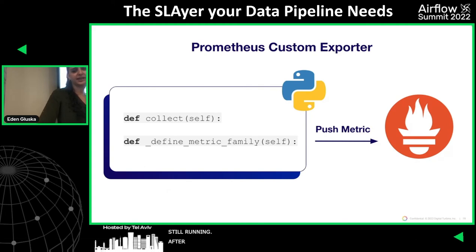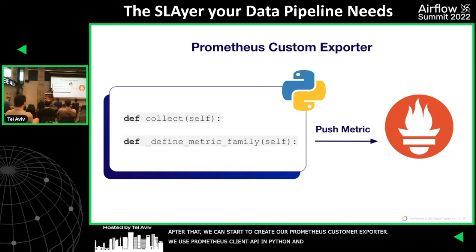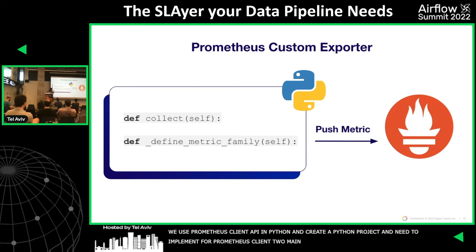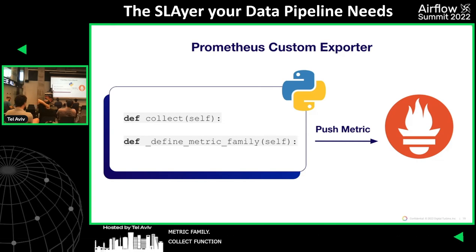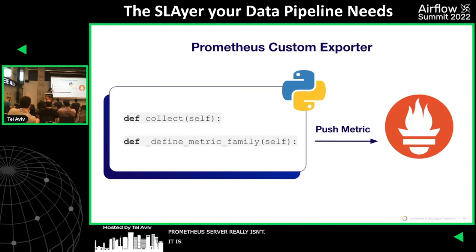After that, we can start to create our Prometheus custom exporter. We use the Prometheus client API in Python. We create a Python project, and we need to implement two main functions for the Prometheus client: the collect function and the define metric family. The collect function is just the query from the last step, and the define metric family defines the labels — task ID, DAG ID, and execution date. With the Prometheus client, you can create a Prometheus server really easily, so the metrics get pushed to Prometheus.